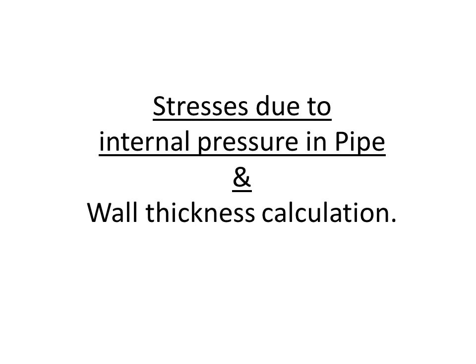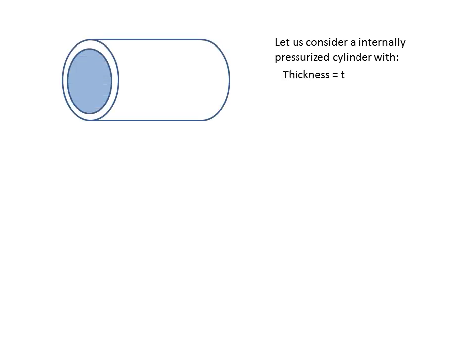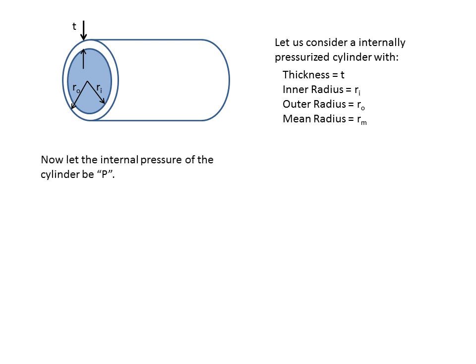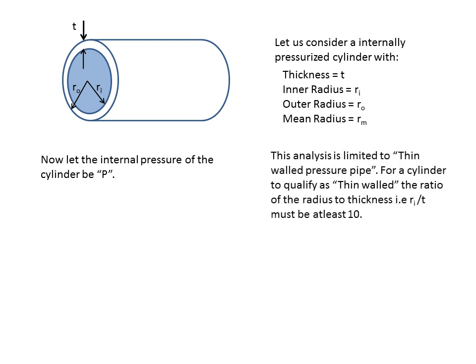This topic covers stresses due to internal pressure in pipes and wall thickness calculation. We consider an internally pressurized cylinder with thickness T, inner radius Ri, outer radius R0, and mean radius Rm. The internal pressure of the cylinder is P. This analysis is limited to thin-walled pressure pipe.